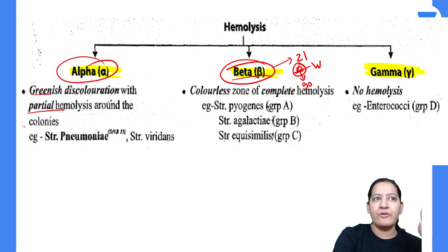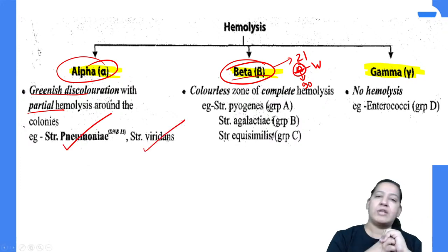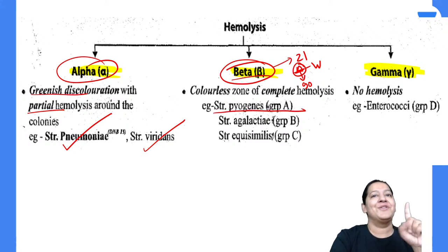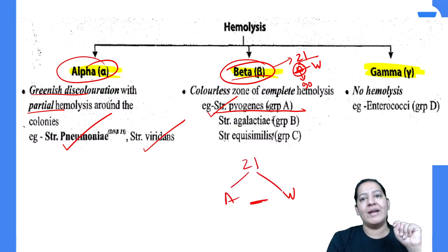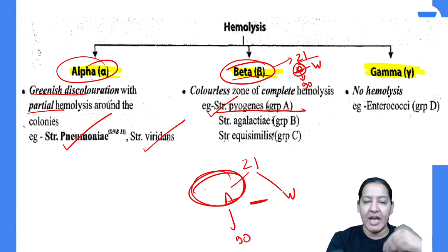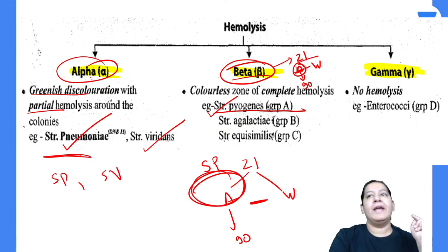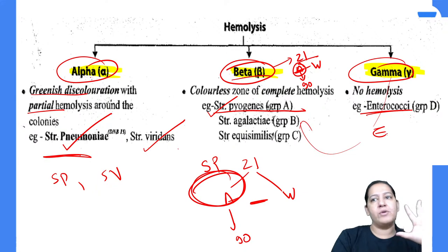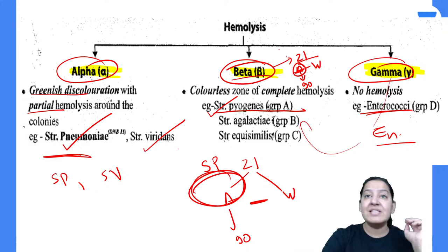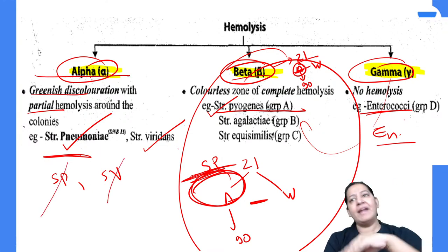For alpha hemolysis, two bacteria are important: Streptococcus viridans and Streptococcus pneumoniae. For gamma hemolysis, Enterococcus is important — initially it was included in beta but now it is classified separately. I will start with beta — specifically group A Streptococcus pyogenes — then cover alpha (pneumoniae and viridans), and finally gamma.